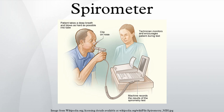The Whole Body Plethysmograph gives a more accurate measurement of lung volume components compared to other conventional spirometers. A person is enclosed in a small space when the measurement is taken. The Pneumatachometer measures the flow rate of gases by detecting pressure differences across a fine mesh. One advantage is that the subject can breathe in fresh air during the experiment.